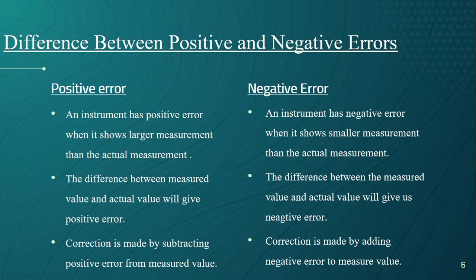For the second type, an instrument has negative error when it shows smaller measurement than the actual measurement. To calculate negative error, we calculate the difference between the measured value and actual value. In this case, correction is made by adding negative error to measure value.